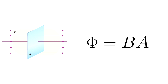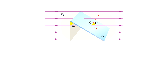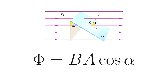But what about when the surface is located at some angle with the magnetic field lines? In this case we add the cosine function to the equation: Φ = BAcosθ. The cosine function is maximum when the angle is zero degrees, meaning when the plane is perpendicular to the field. The cosine function is zero when the angle is 90 degrees, meaning when the plane is parallel. Note that the angle is measured between the normal of the surface and the magnetic field lines.